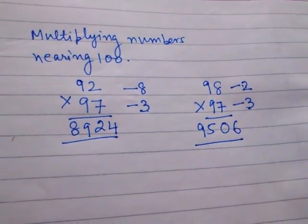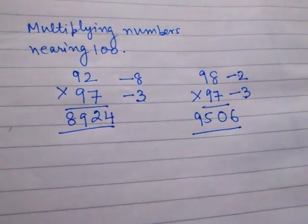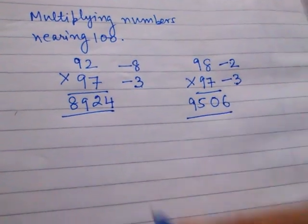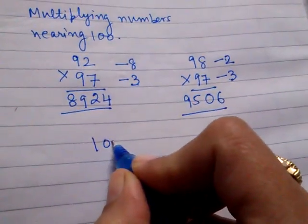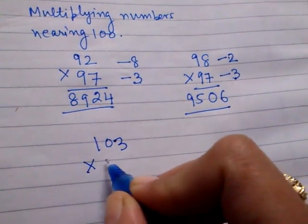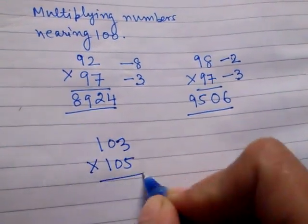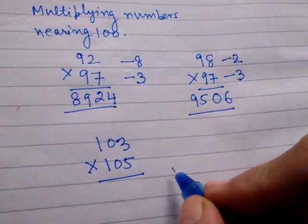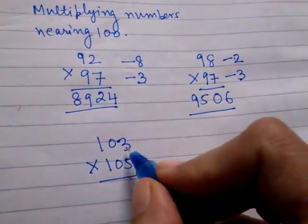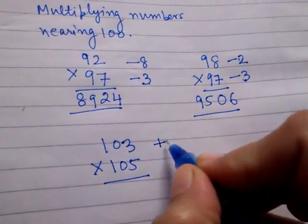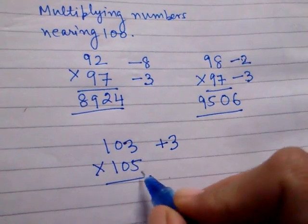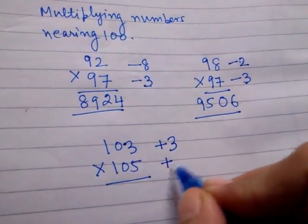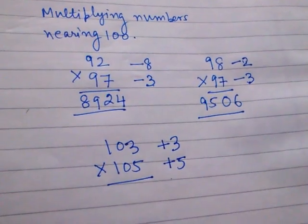We can now take numbers which are greater than 100. For example, we have to multiply 103 by 105. For multiplying these two, we will write 103 is 3 more than 100 and 105 is 5 more than 100.